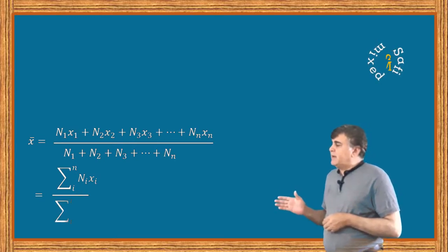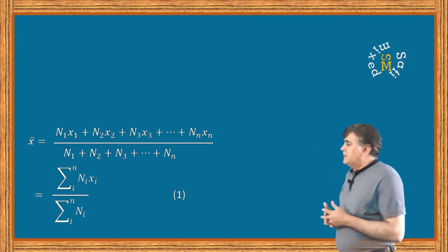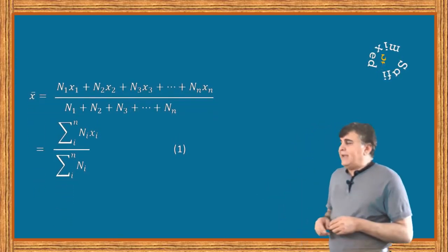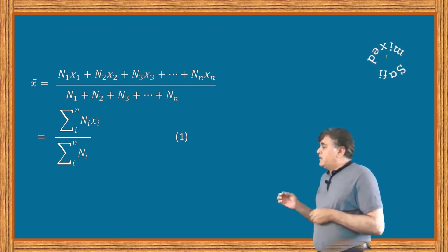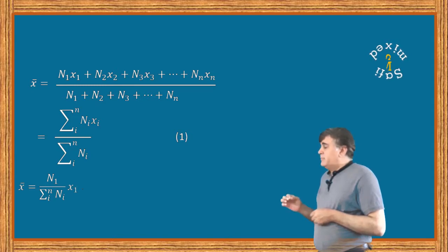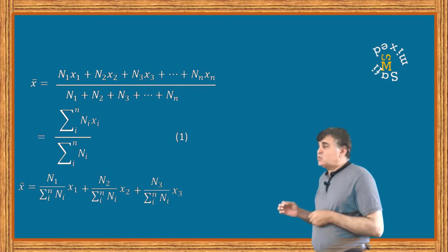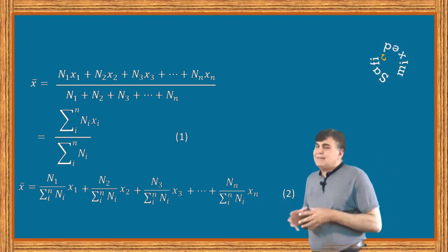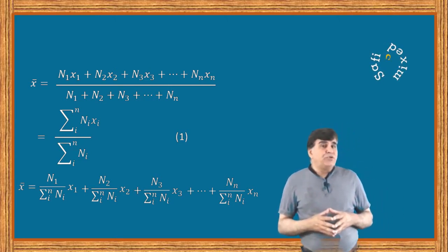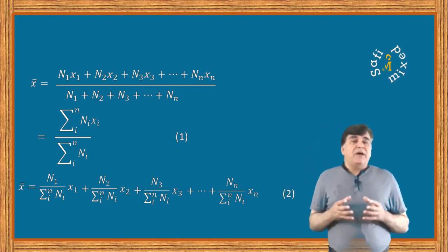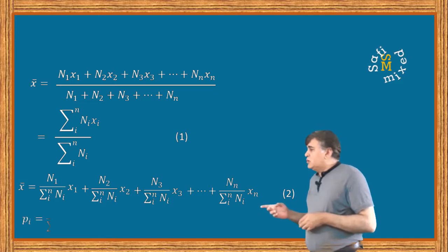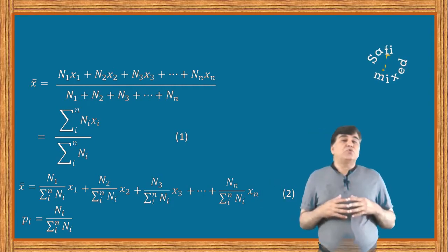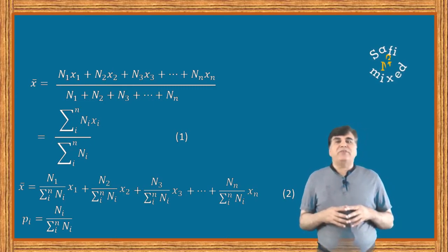We can put equation 1 into another useful form by writing it as x-bar equals n1 divided by the summation of n sub i times x1, plus n2 divided by the summation of n sub i times x2, and so on. We know from probability theory that the ratio in each term is the probability of that outcome, that is p sub i equals n sub i divided by the summation of n sub i. If you don't know about this concept, I would suggest you watch my videos on probability theory.